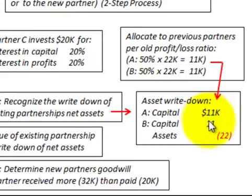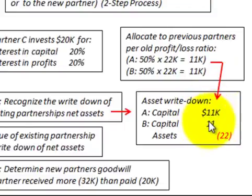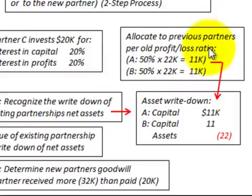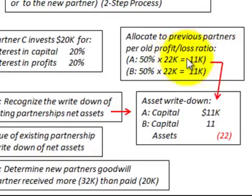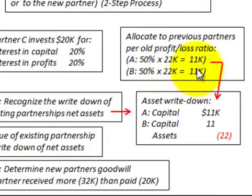How do we calculate the $11,000 asset write-down allocated to each of Partner A and Partner B? That was allocated based on the previous partners' old profit and loss ratios of 50%. Partner A got 50% of the $22,000 revaluation write-down for $11,000, and Partner B got 50% of the $22,000 for $11,000 of the write-down. So that was split 50-50.